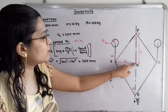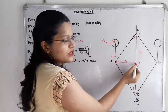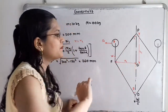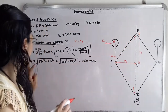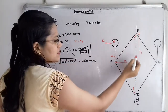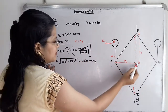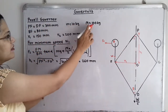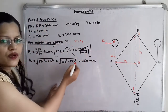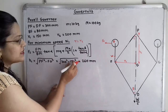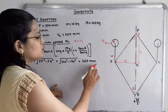We find distance H1, the vertical distance from pivot point P to point G, i.e., distance PG. Using triangle PFG: H1 = √(PF² − FG²) = √(300² − 150²) = 260 mm.